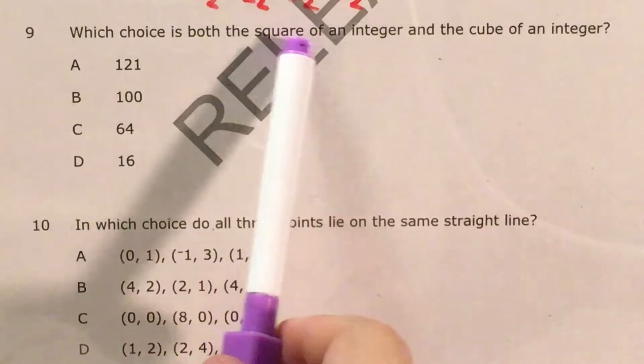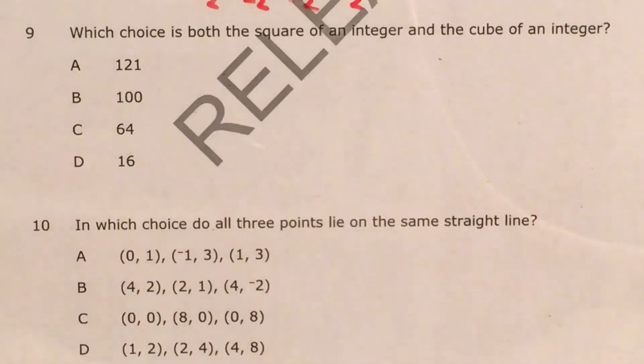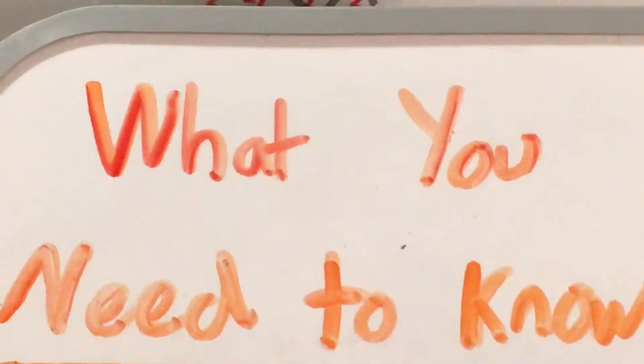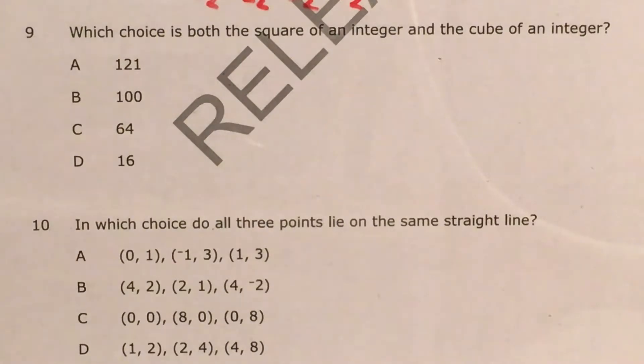We can see that we're just being asked to find which choice is both the square of an integer and the cube of an integer. To do a question like this, I just need to know what square numbers are and what cube numbers are. So let's talk about each of those.